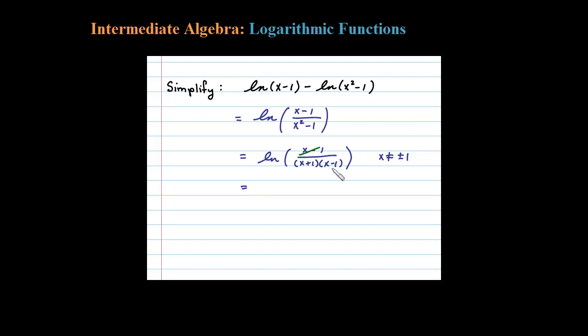And then when we cancel, this entire X minus 1 factor cancels, leaves us with the natural log of 1 over X plus 1. So that's completely simplified at that point. Let's make a note again of that restriction.